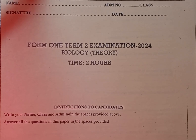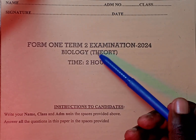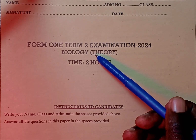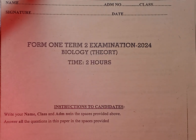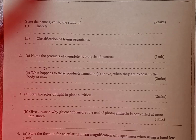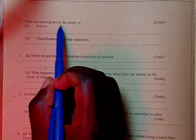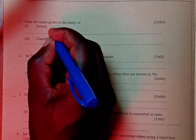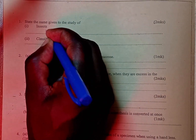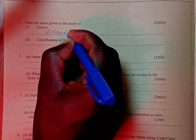Welcome to the discussion. We are looking at form 1 term 2 examination, biology, and we are going straight to question number 1. Question number 1 reads: state the name given to the study of insects. The study of insects is known as entomology.